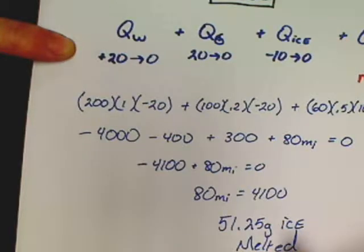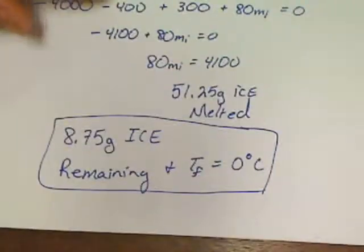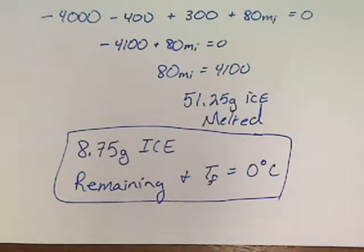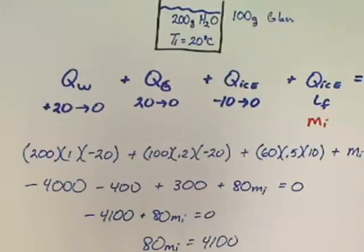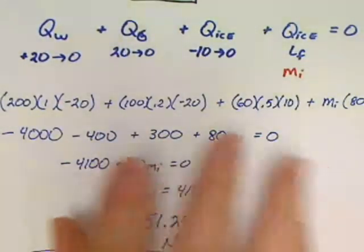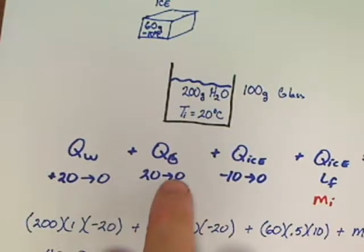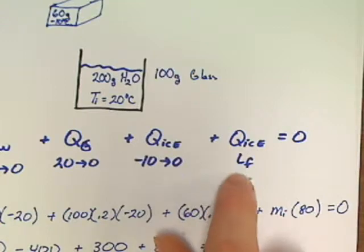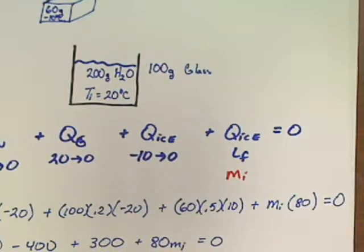Temperature final is 0 degrees Celsius. So to summarize: if you work the problem and the answer comes out screwed up — negative — go back, make temperature final zero, stop when you get to the LF step, and solve for the mass that melted. You're not going to melt all the ice.